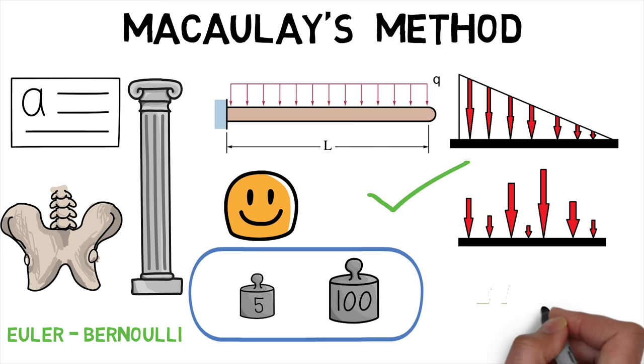The differential equation is the product of EI and the second differential of Y with respect to X equals moment M.